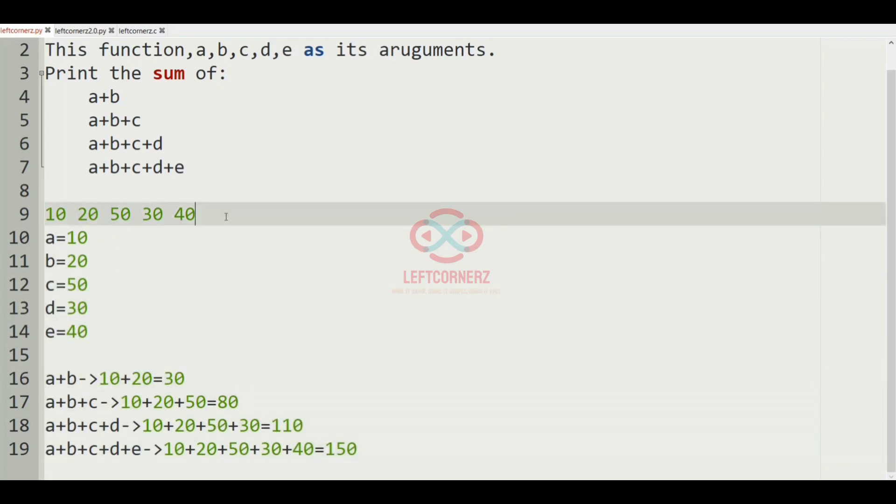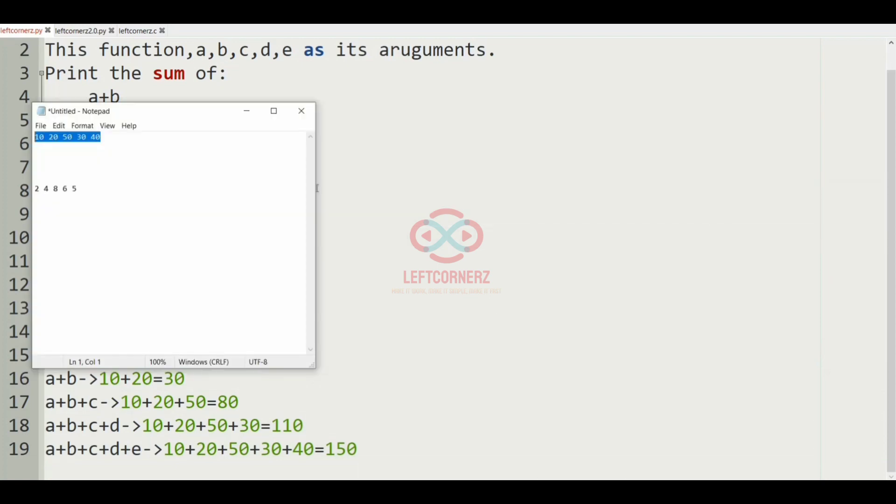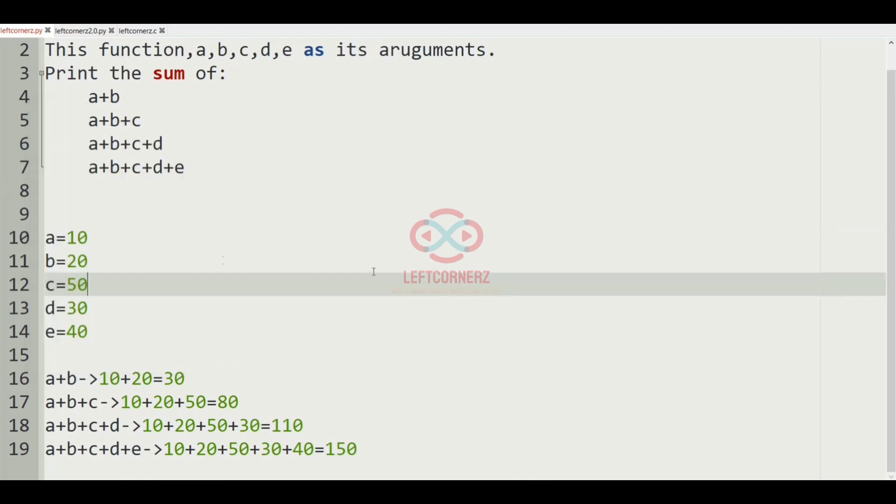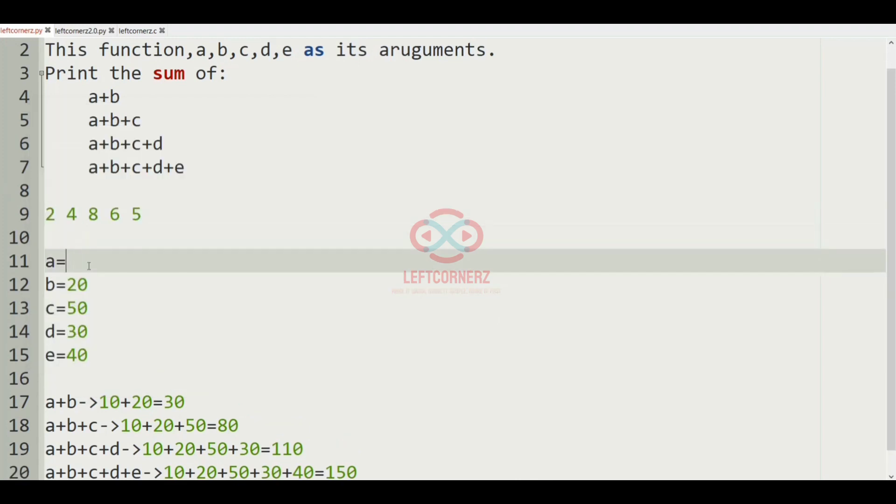Now we'll take our another test case. In this test case, a is 2 and b is 4 and c is 8 and d is 6 and e is 5. So now a plus b will be 2 plus 4, which gives us 6. And a plus b plus c will be 2 plus 4 plus 8.